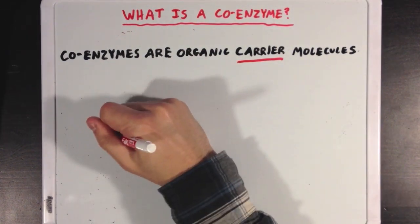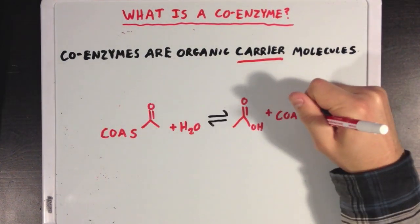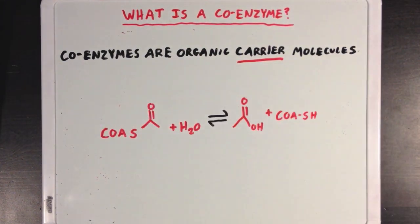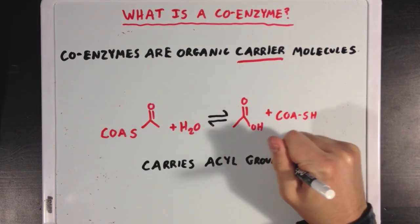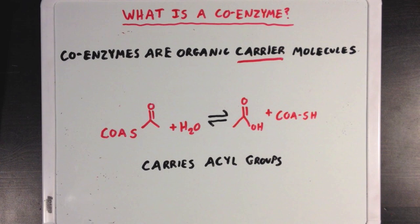Another example of a coenzyme is coenzyme A, which like NADH acts as a carrier molecule, but instead of carrying electrons like NADH does, coenzyme A — which we sometimes call CoA — holds onto acyl or acetyl groups instead. And you'd see CoA appear quite often in metabolic reactions, where it'll carry these two-carbon acetyl groups from one molecule to another.